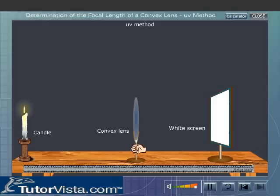Adjust the position of the lens so that a blurred image of the candle is obtained on the screen. Now move the screen back and forth till a sharp image is formed on the screen.